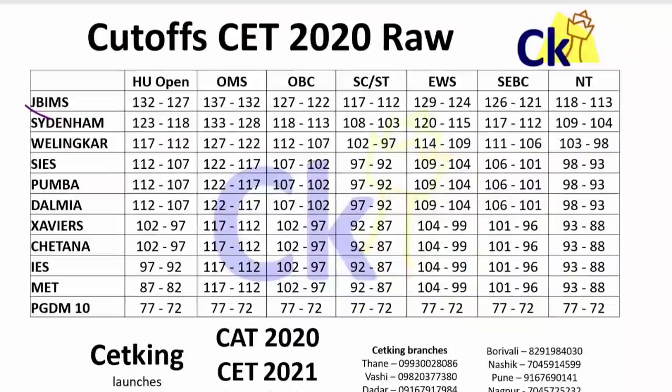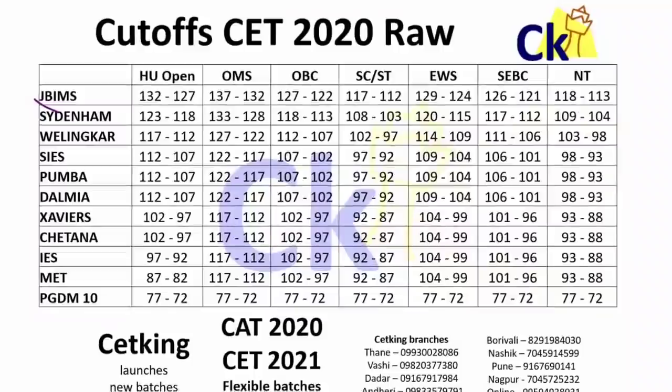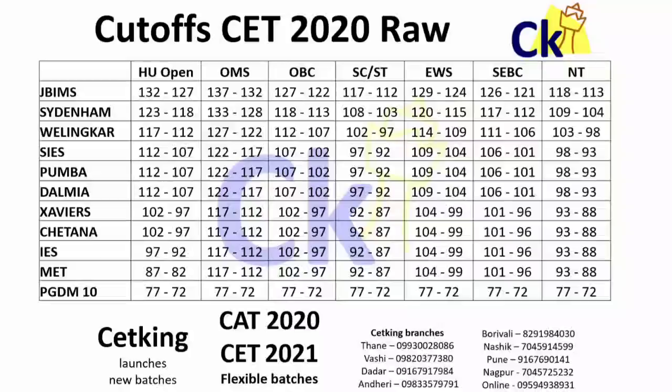Abhi ke liye what I want to compare is the raw score, which is the main thing, and this is based on all four slots. Abhi usme scaling kaisi hogi mujhe nahi pata - hame idea nahi aa raha ki kaun upar ja raha hai, kaun neche ja raha hai. But moota moota, this is the cutoff - cutoff will be around 132 to 127 marks.